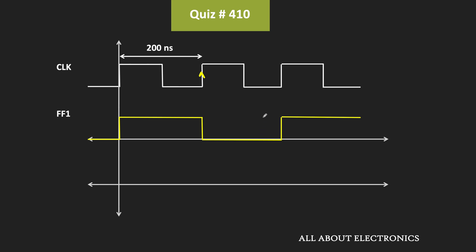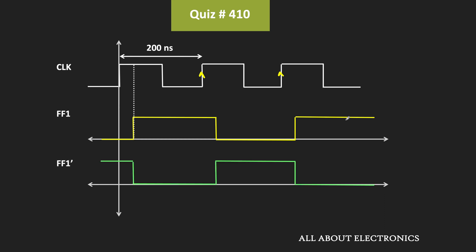At the next rising edge its output will become 0, and remain in that state until the next rising edge. Then once again at the next rising edge its output will become 1. Without any propagation delay, this is how the output of the flip-flop should look like. But this first flip-flop has a propagation delay of 30 ns, meaning this output will get shifted by 30 ns. This is how the Q output of the first flip-flop will look like. The Q' output will be exactly the opposite of this Q output, and this will be one of the inputs to the AND gate.